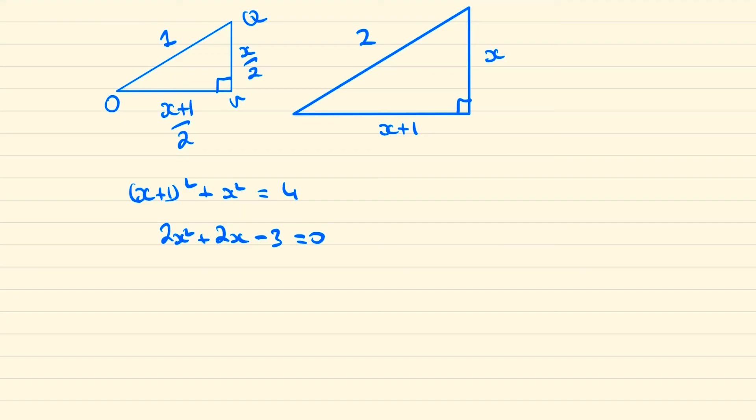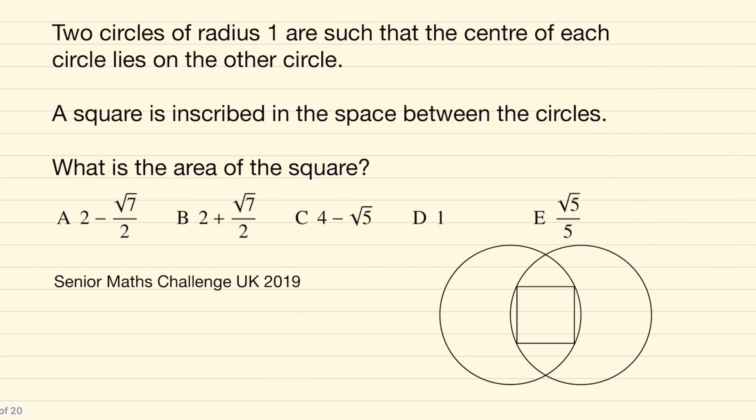Finding the roots of this equation using either the formula or completing the square, we find that x equals minus 1 plus root 7 over 2. Therefore the area of the square, which is x squared, will be 2 minus root 7 over 2. So the answer to this problem is A, 2 minus root 7 over 2.